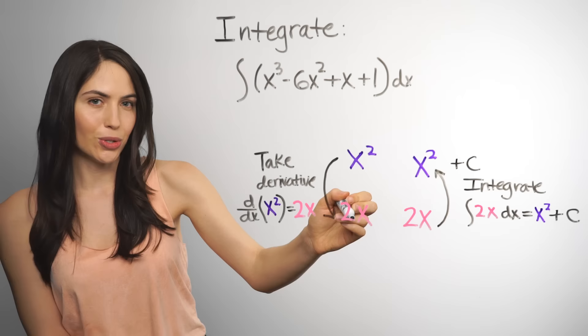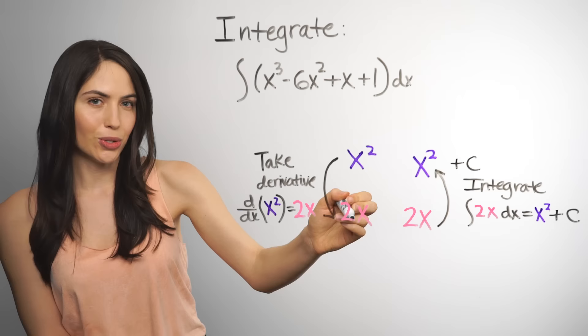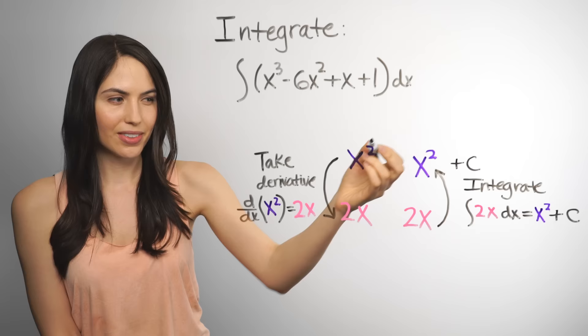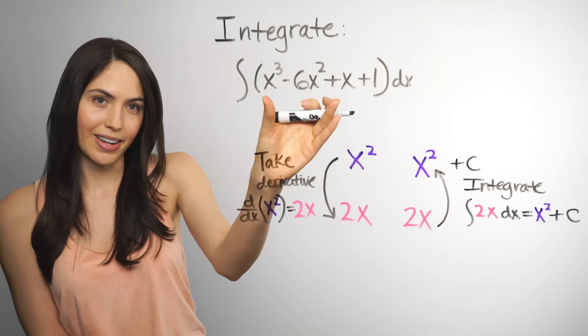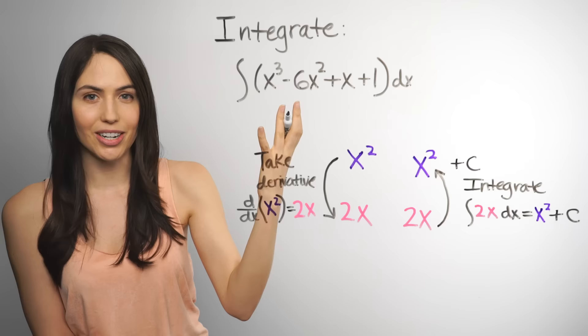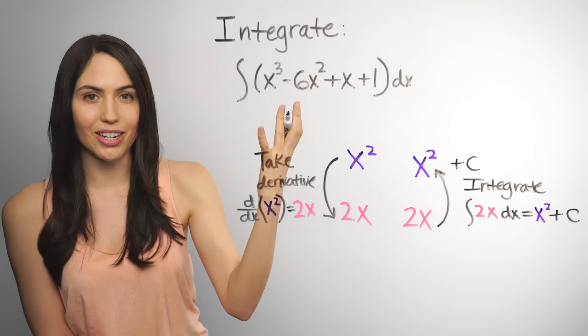So if a function gave us a certain derivative when we differentiated, then integrating it will be getting back the original function. So what we're integrating is the derivative of some other function that we will find, and that's the antiderivative or indefinite integral.